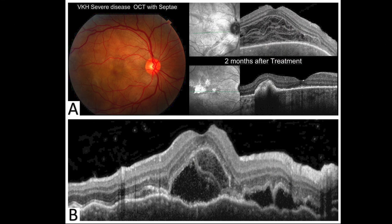Here is a VKH disease case with subretinal septae, which is considered classic for that condition. The top panel shows before and after treatment, with the bottom panel B showing magnification.